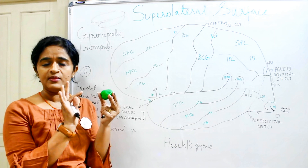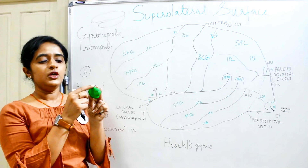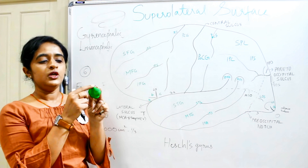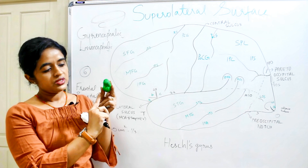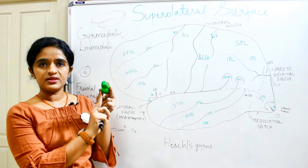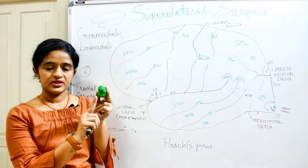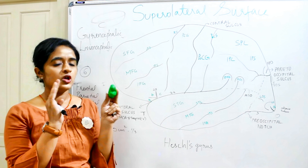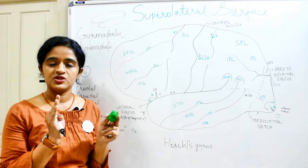There are three main borders. Superiorly, toward the median plane, is the superomedial border. Inferiorly, there are two borders: the inferomedial border medially and the inferolateral border laterally. So altogether, a cerebral hemisphere has three poles, three surfaces, and three borders, and the two hemispheres are connected by the corpus callosum, a bundle of white matter.